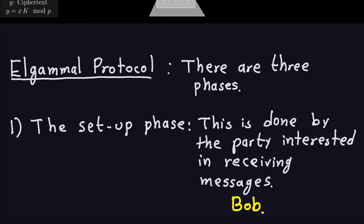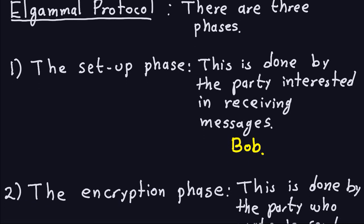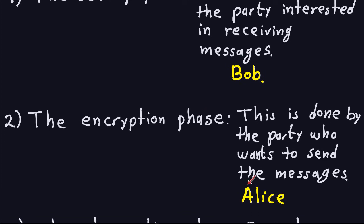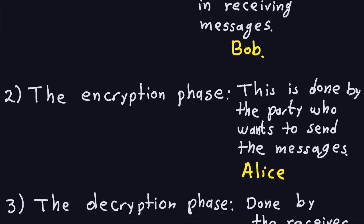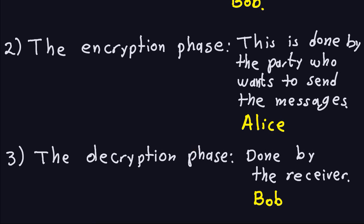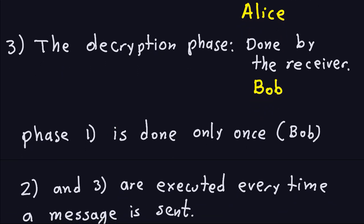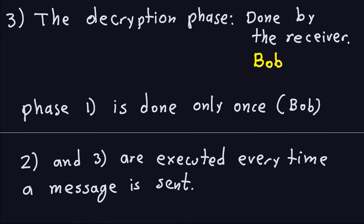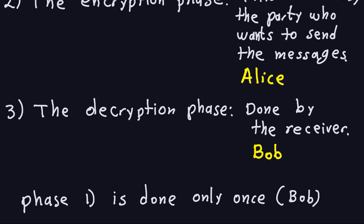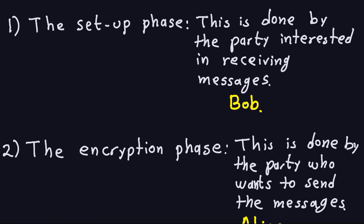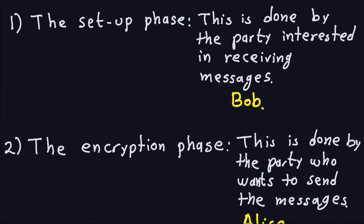Phase one is done only once — Bob does the setup only one time and publishes it publicly for everyone to see. Phases two and three are executed every time a message is sent: every time Alice sends a message she has to do encryption, and Bob has to do decryption. Phase one is done only once, and that is on the side of the receiver.